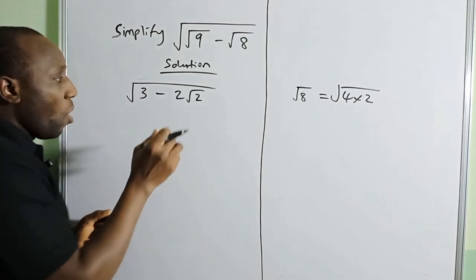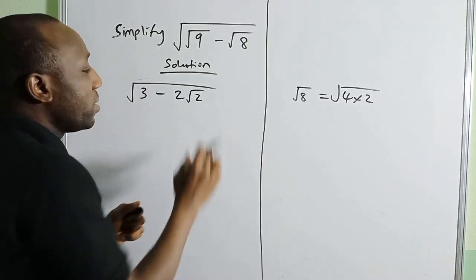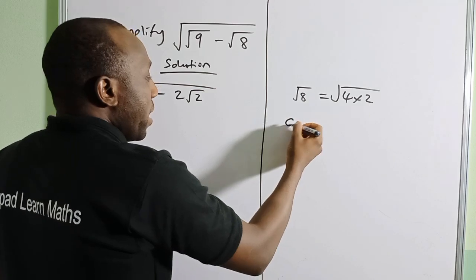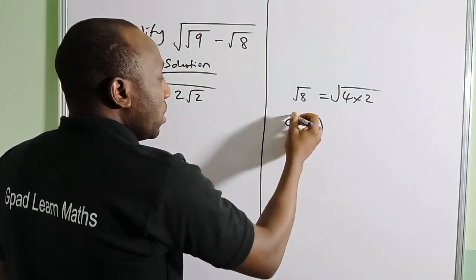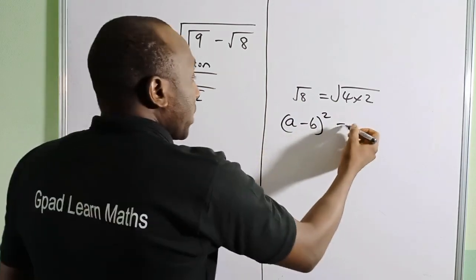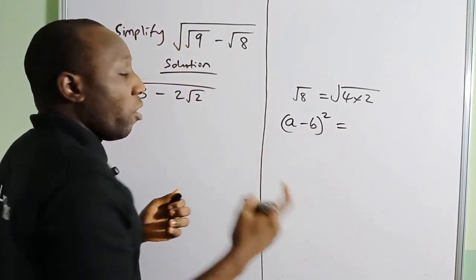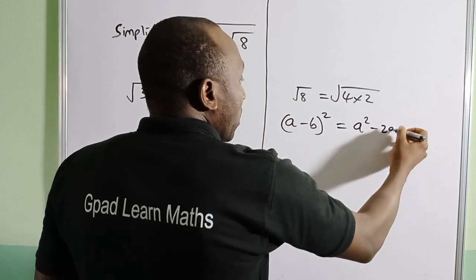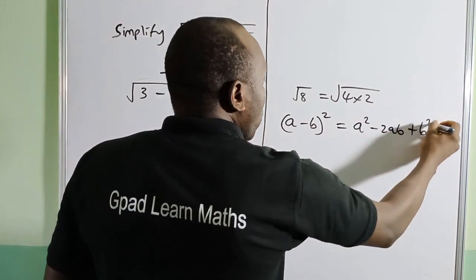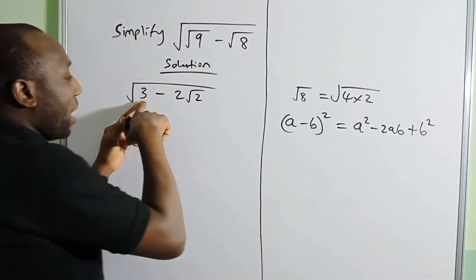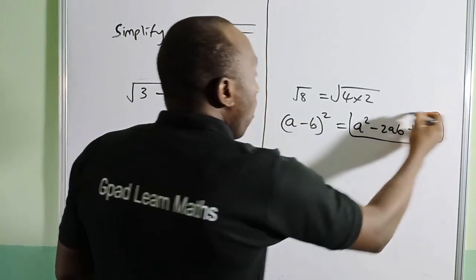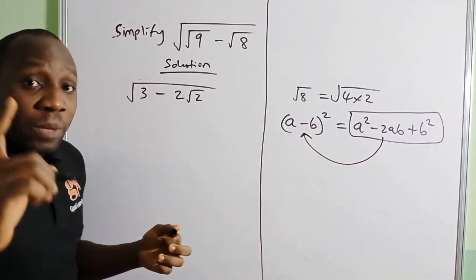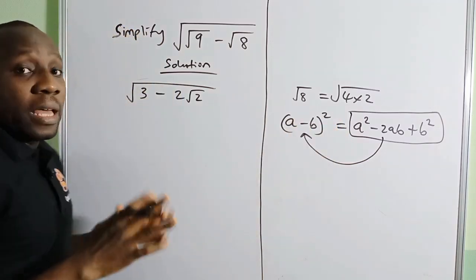Let me show you what I mean. If you have (a - b)², this can be expanded using algebraic identities: a² - 2ab + b². I'm trying to see how I can make this expression be of this form so that I can transfer it, and then it will be easy to use the square to cancel the square root, which will help us simplify the whole expression.